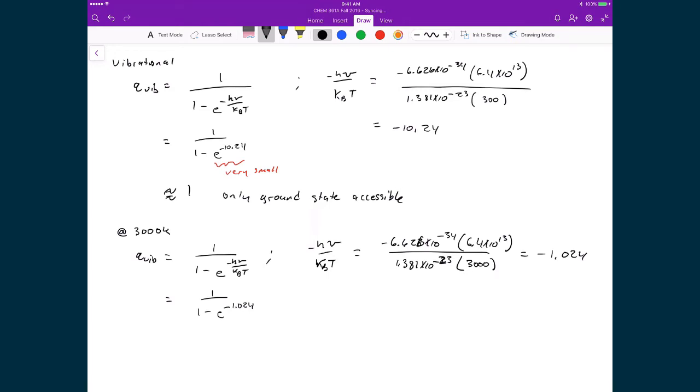So if I were to substitute that in now, 1 minus e to the negative 1.024, well, this exponential is now a number that's comparable to 1, which means that my qvib now is going to be equal to 1.56. So what this says now is that more than the ground state is actually accessible. But you can see that this number is still very, very small compared to the rotational and the translational. So you can see how little of an effect the vibrational modes have on the partition function, being how few vibrational states are accessible even at these highly elevated temperatures. Where at 3,000 Kelvin we would expect that the CO molecule would probably have decomposed before it actually has any significant contributions from vibrational excitations.